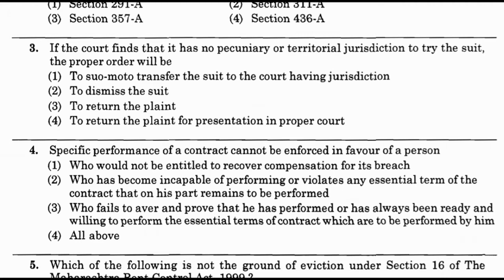Question number 4: Specific performance of contract cannot be enforced in favor of the person — option 1: who would not be entitled to recover compensation for its breach; option 2: who has become incapable of performing or violates any essential term of the contract; option 3: who fails to aver and prove readiness and willingness to perform the essential terms; option 4: all of the above. The answer is option 4 — all above. Note: By the 2018 amendment, these provisions have been changed — go through the amendments in detail.